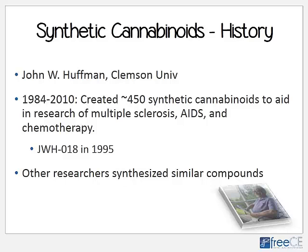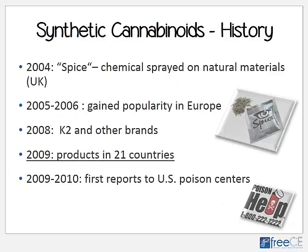One compound in particular, named JWH-018, was developed in 1995, and that one is important because it's pretty much the first one that was being sold illicitly as a drug of abuse. Other researchers at other facilities and universities have synthesized similar compounds, and so there are many of these compounds that are out there. More recently, we've seen such compounds as UR-144 and XLR-11.